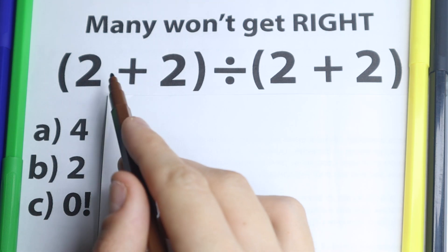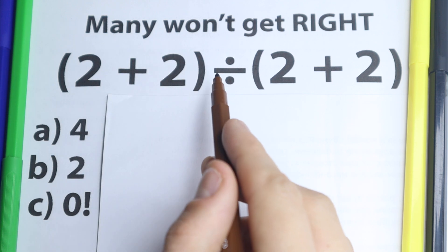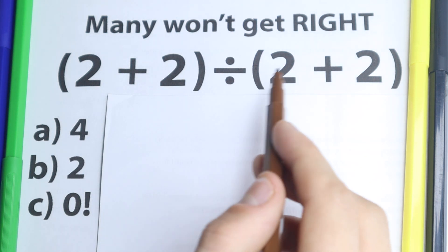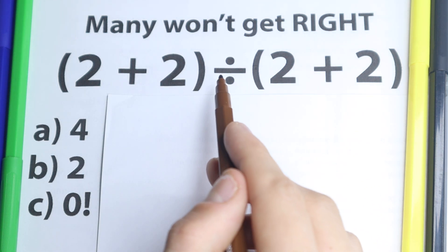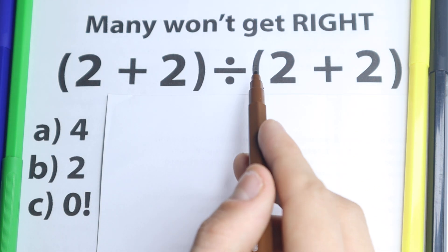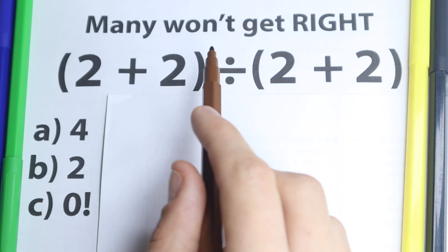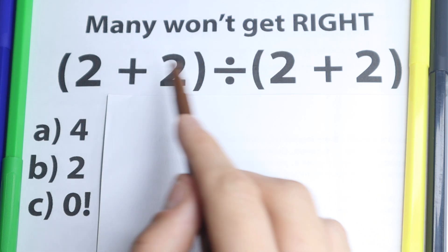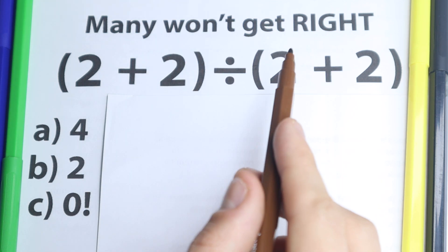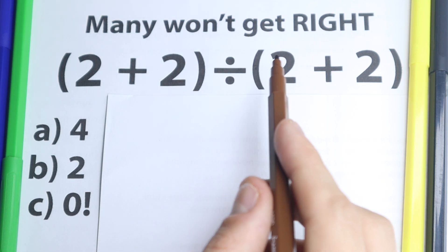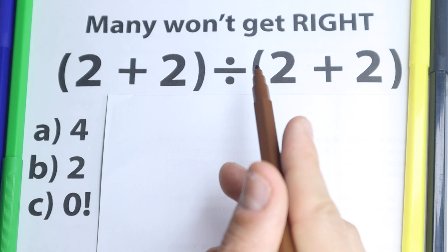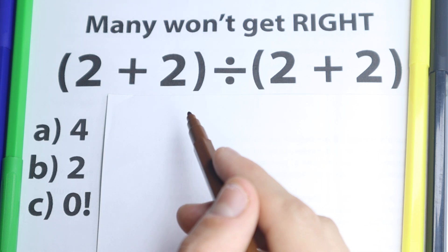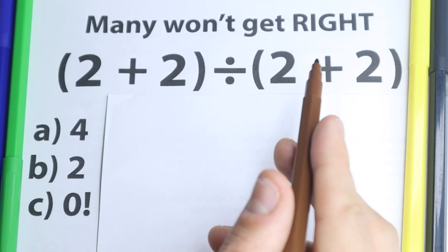We have 2 plus 2 in parentheses divided by 2 plus 2 in parentheses. On the surface this is a very easy question — we don't have any exponents, just a very simple expression. But many people won't get it right, and I'm going to show the common mistake in this video.